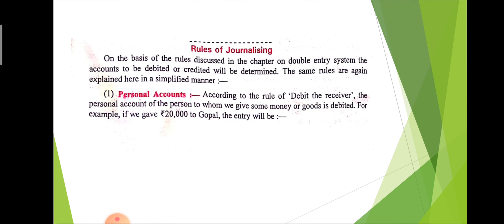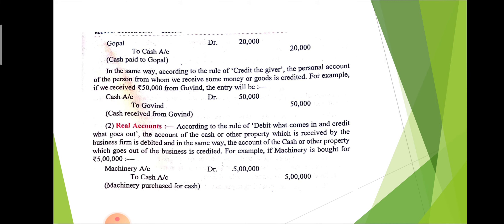Rules of journal: Journals are fully based on three rules. The first is personal account, which gives the rule: debit the receiver and credit the giver. For example, if we gave 20,000 rupees to Gopal — we are the businessman — Gopal is the receiver and our cash is decreased. The rule says debit the receiver, so the journal entry is: Gopal debit to cash account, because Gopal is the receiver and we reduced cash by paying him rupees 20,000, affecting both the debit and credit sides.